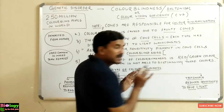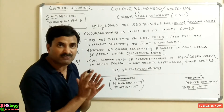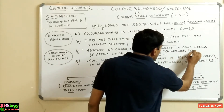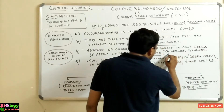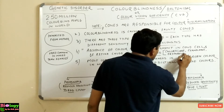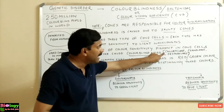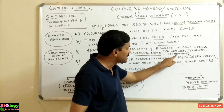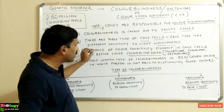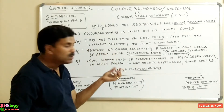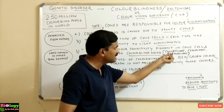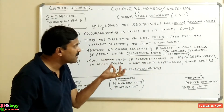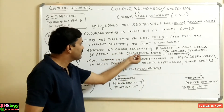There are three types of pigments found in the cone cells of the retina. The first is known as chlorolab, the second is cyanolab, and the third is erythrolab. As the names indicate, chlorolab is for green color, cyanolab is for blue color, and erythrolab is for red color. Deficiency of these pigments in the cone cells of the retina causes colorblindness.